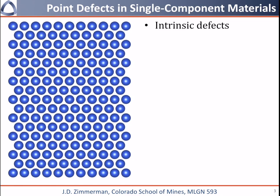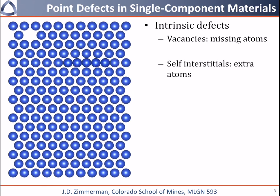I want to talk about defects in a single component material first, and we'll first talk about intrinsic defects. One of the first types of defects we could create is we could remove an atom — this is what we call a vacancy, which just means you have a missing atom. We can also put an extra atom somewhere into an interstitial site in the lattice. This will distort the lattice around it to make room for it, as shown here — the extra atom has been inserted and the lattice had to squeeze together to accommodate it.